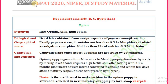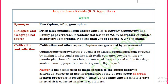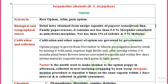Opium consists of isoquinoline alkaloids biosynthesized from the tyrosine amino acid. The synonyms of opium are: opium is also known as raw opium or afim, and it is also known as gum opium. The biological source for opium is a dried latex obtained from the unripe capsule of Papaver somniferum, family Papaveraceae.